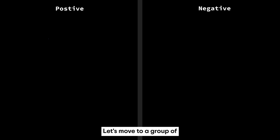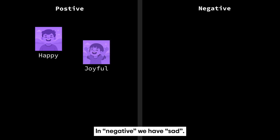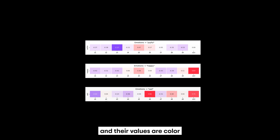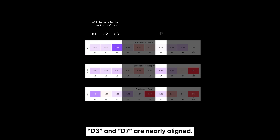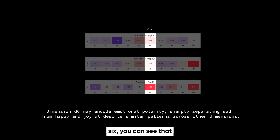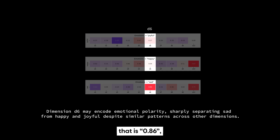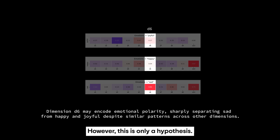This allows us to reason about language models in a more interpretable way. Looking at emotional words — happy, joyful, and sad — across 10 dimensions, happy and joyful show very similar patterns across most dimensions. However, at dimension 6, happy has a value of 0.04, joyful 0.17, but sad has a very high value of 0.86. This suggests dimension d6 might encode emotional polarity, potentially distinguishing joy from sadness — though this could also represent something correlated like emotional intensity or context frequency.